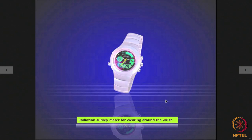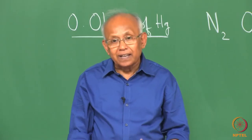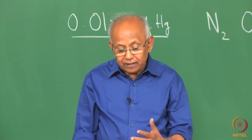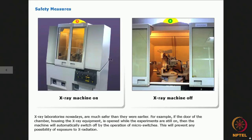Sometimes the workers working on an x-ray machine, they have a radiation survey meter which they wear around the wrist like a watch. That will also indicate whether the radiation level is harmful or not. If it is harmful, then the worker must leave that place immediately. The x-ray laboratories nowadays, they are much safer than they were earlier. Nowadays, if you keep the x-ray machine inside a chamber, there are micro switches which are provided in the doors to the chambers. If the machine is on and someone inadvertently opens the door, then there are micro switches which will automatically switch off the machine. This will prevent any possibility of exposure to the harmful x radiation.